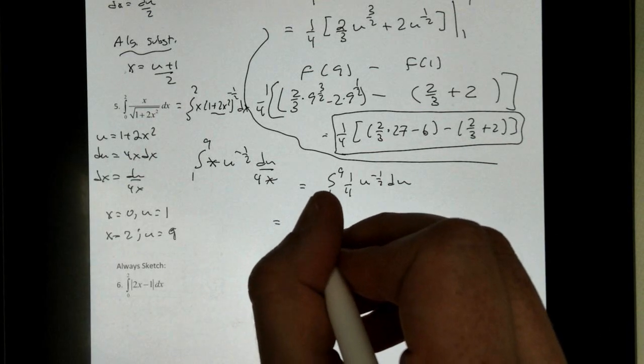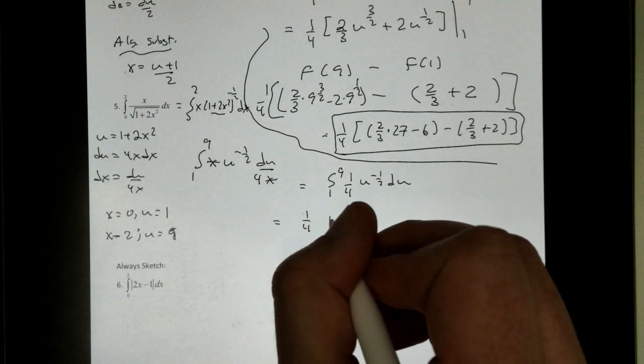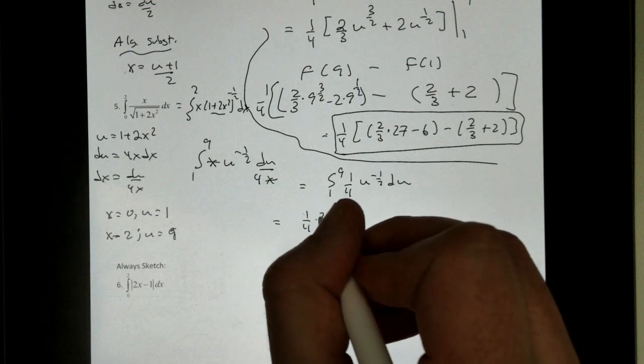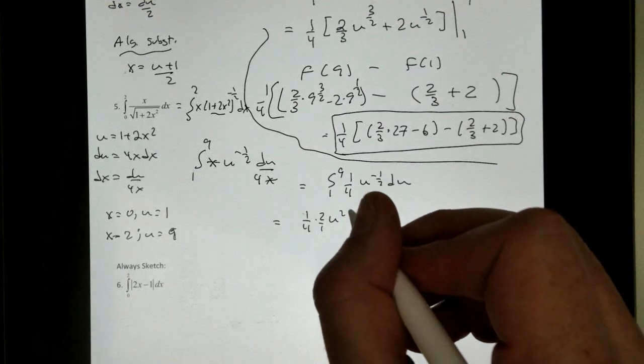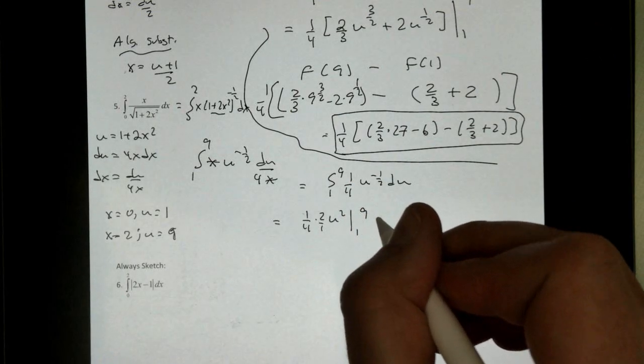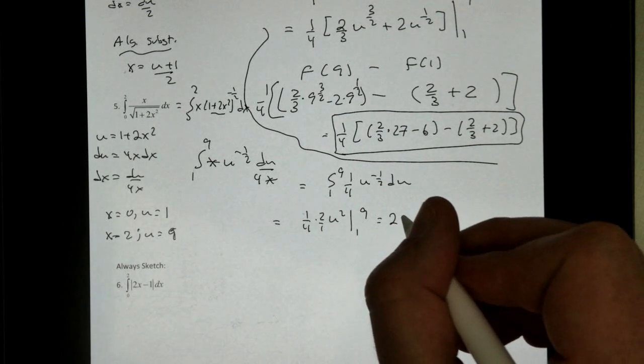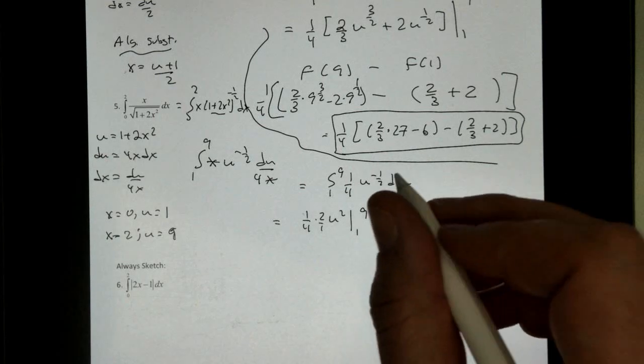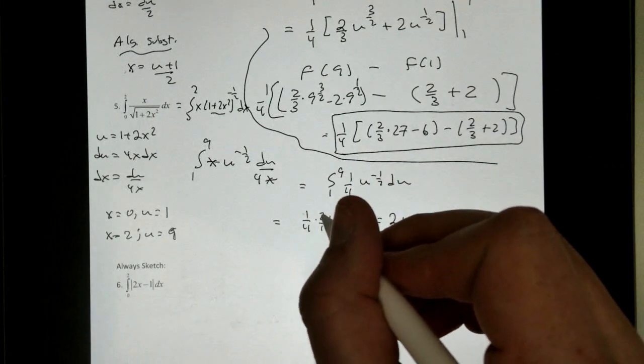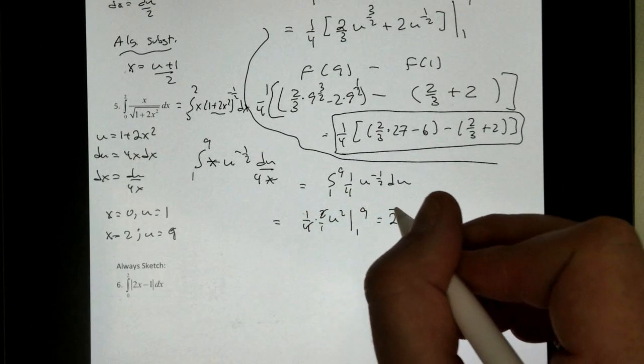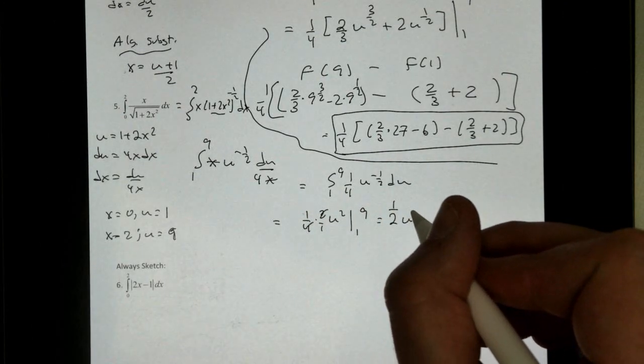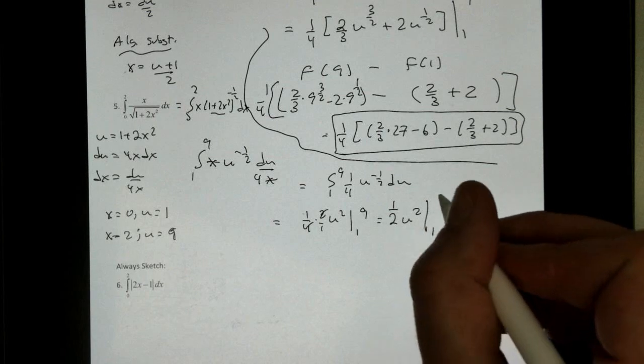Integrating it, we get 1 fourth. Be careful. This becomes u to the 1 half times 2 over 1, we don't need to plus c here. From 1 to 9, we're going to evaluate that. And if you need to clean it up, this is 2u. Cleaning it up, I can reduce. And that becomes 1 half u to the 1 half, and we evaluate that from 1 to 9.